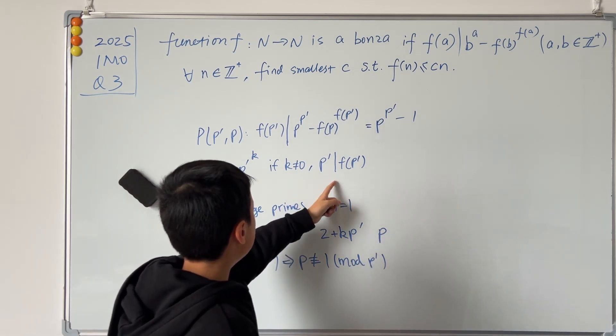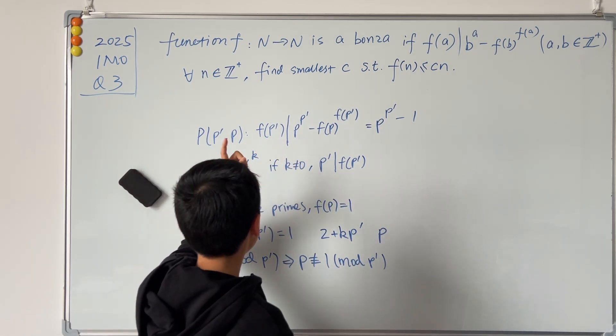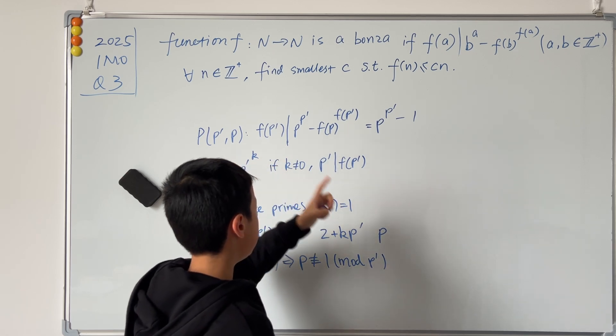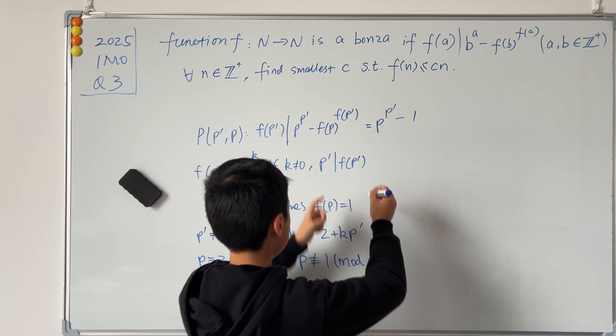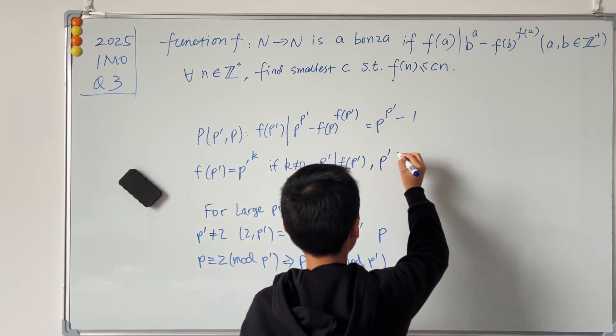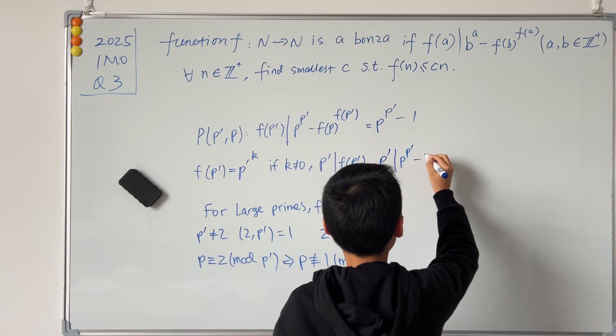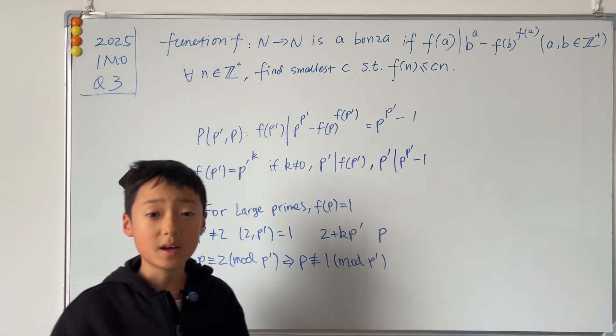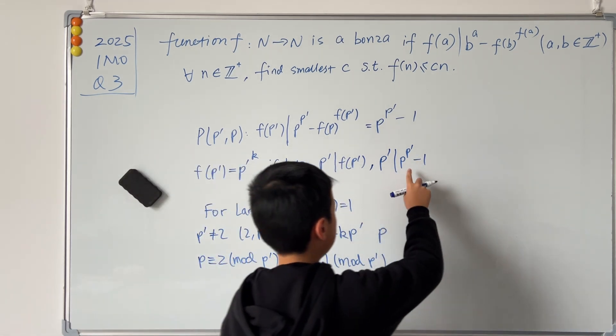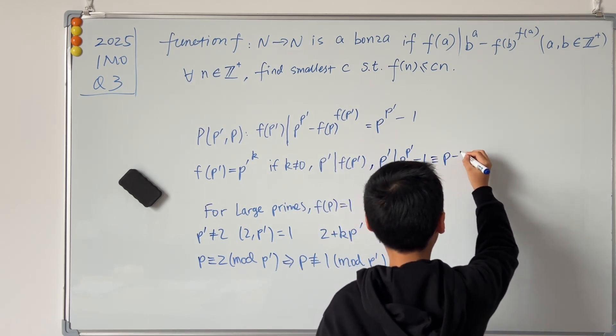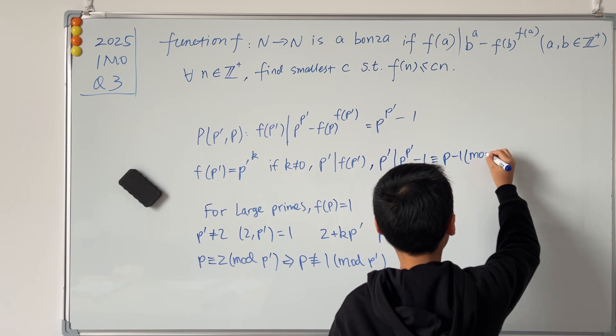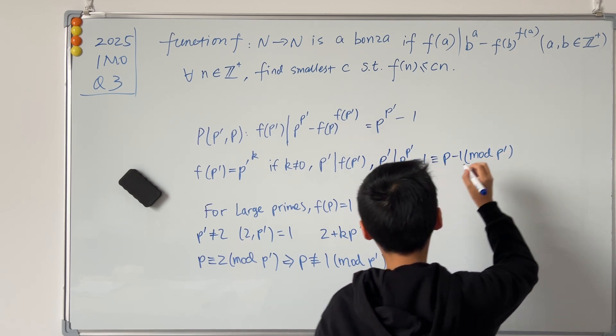So since p' divides f(p'), and f(p') divides p^(p') - 1, then we know that p' will divide p^(p') - 1. And if we use Fermat's Little Theorem, then we know that this is just congruent to p - 1 (mod p').